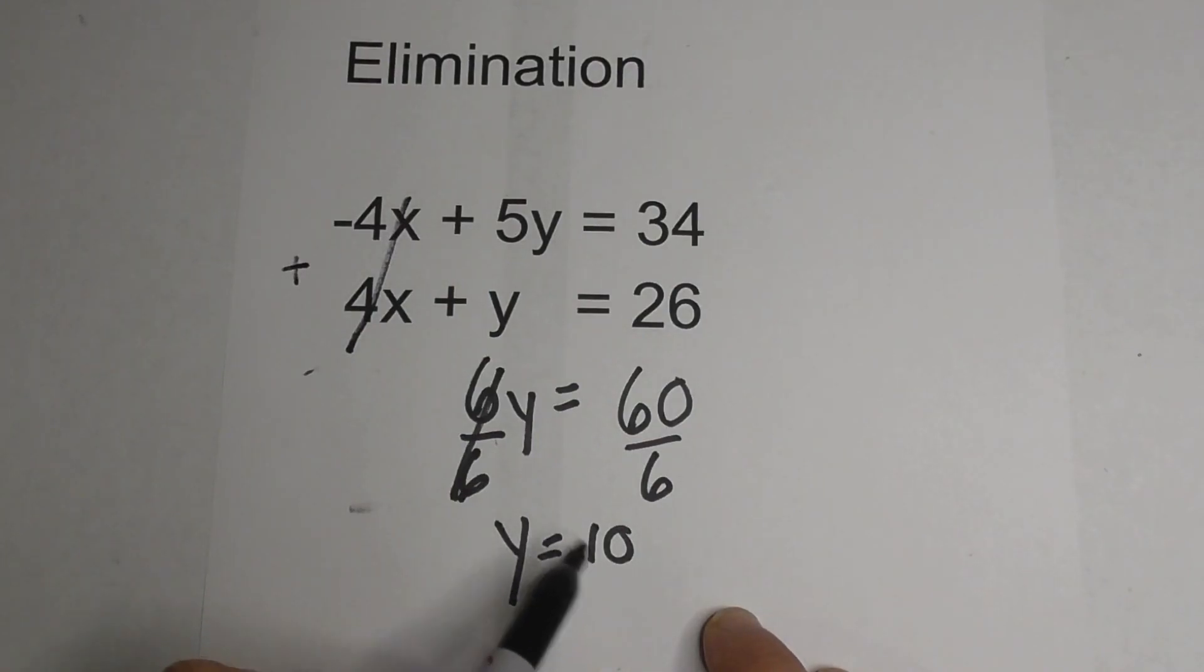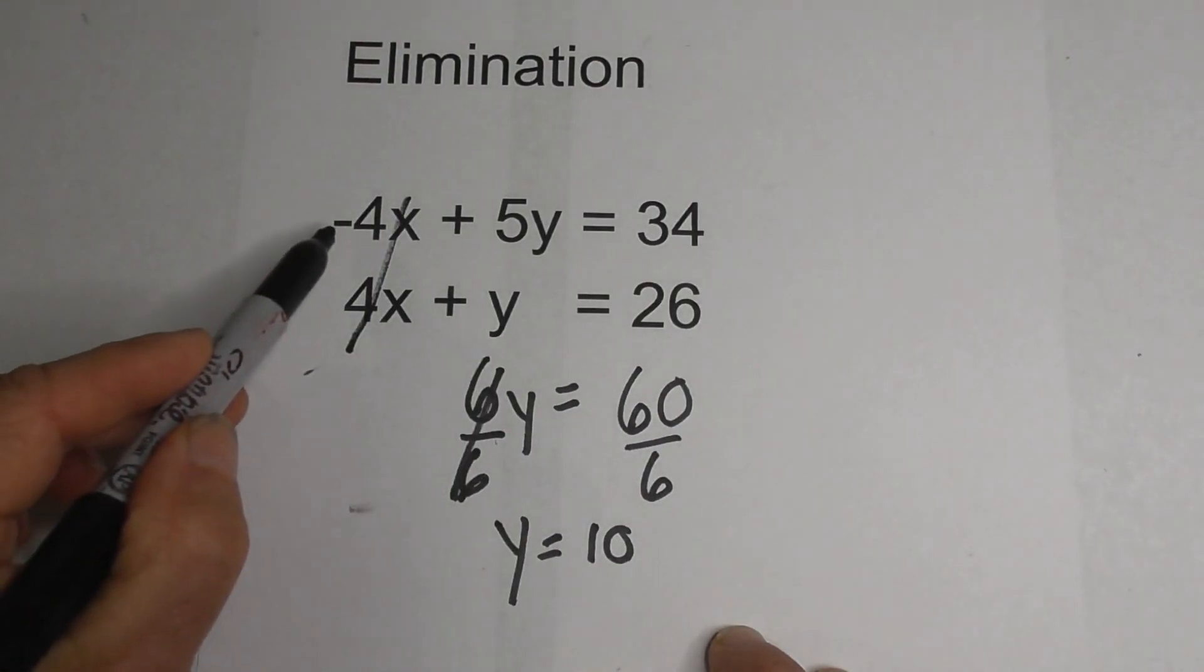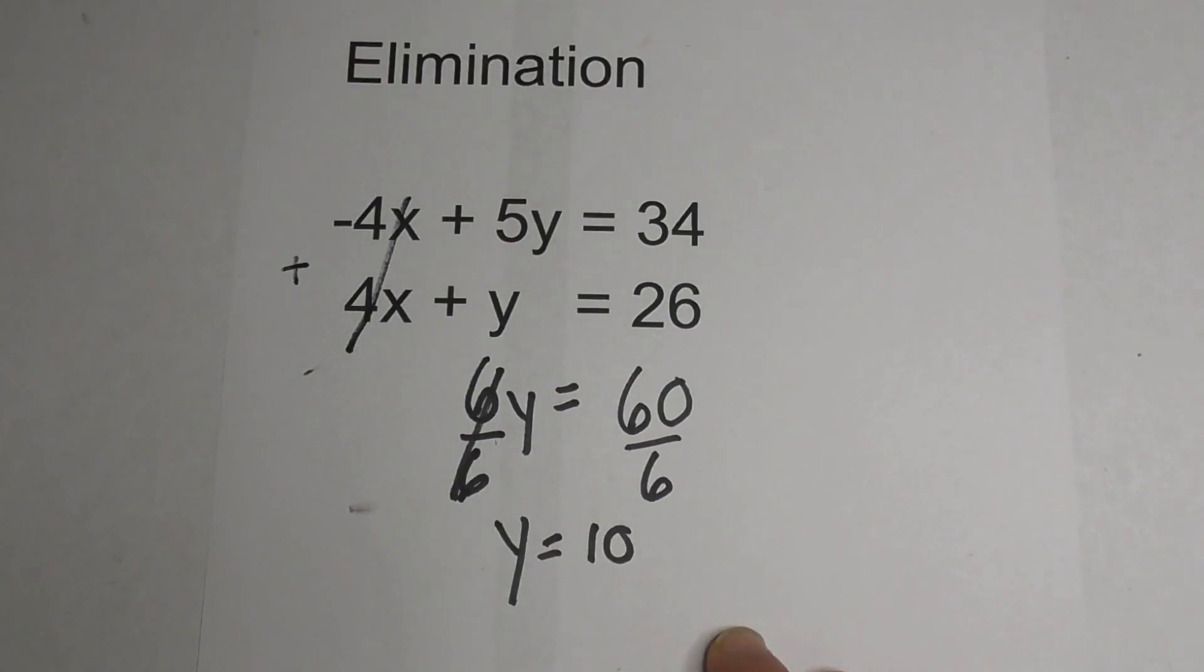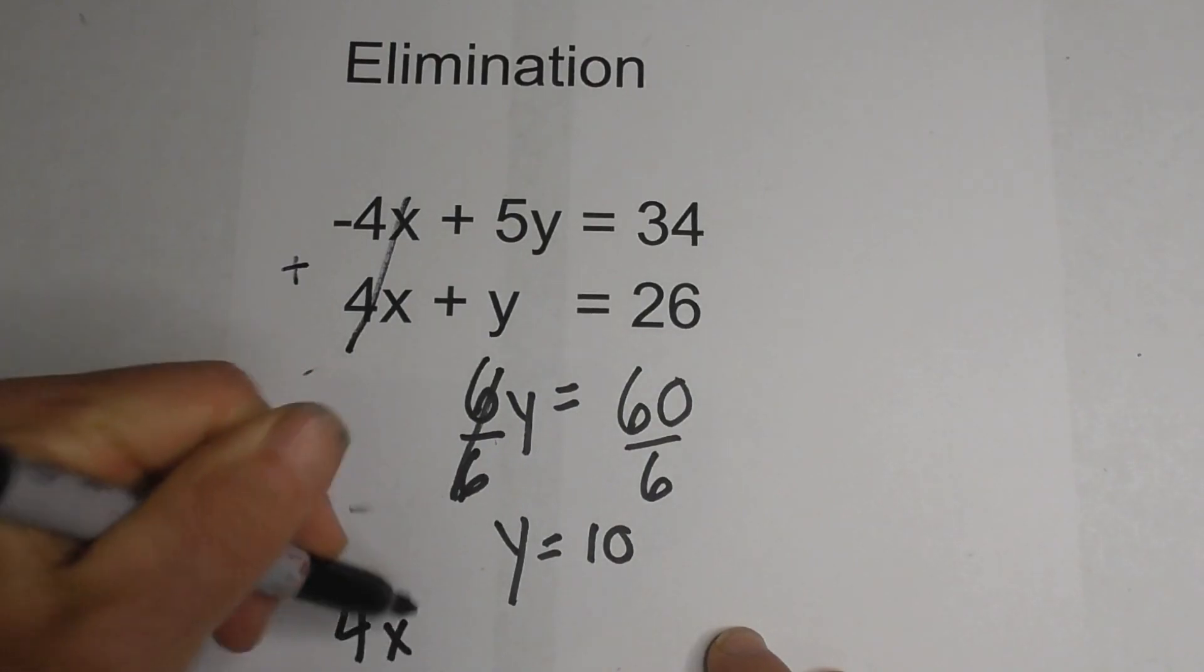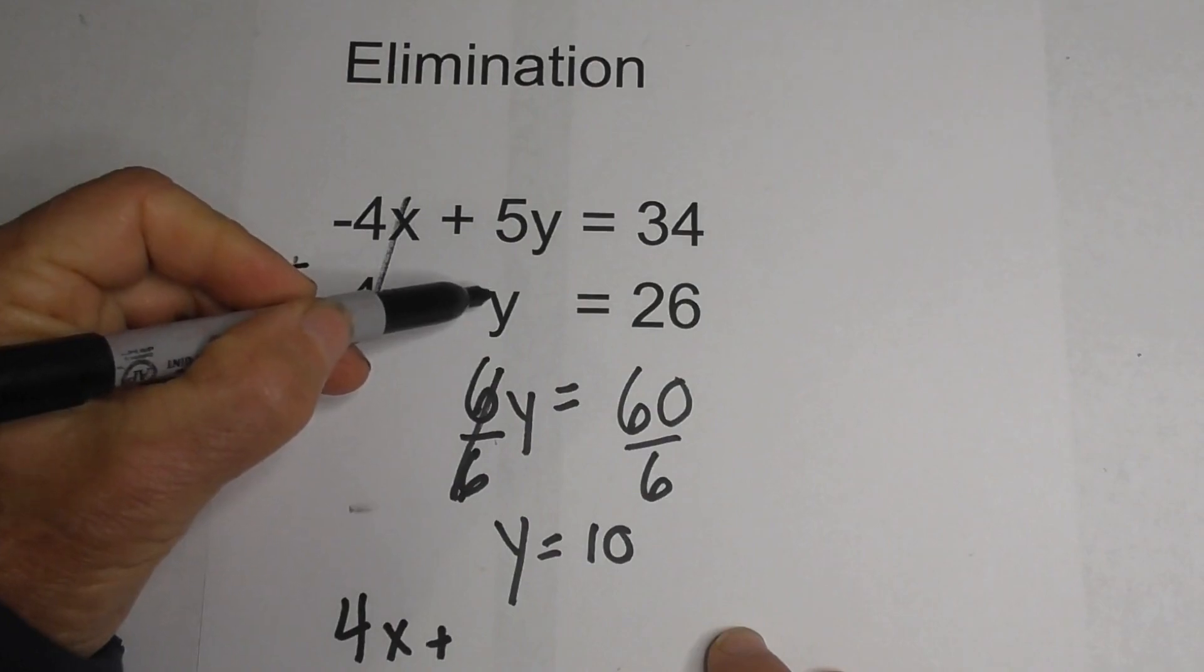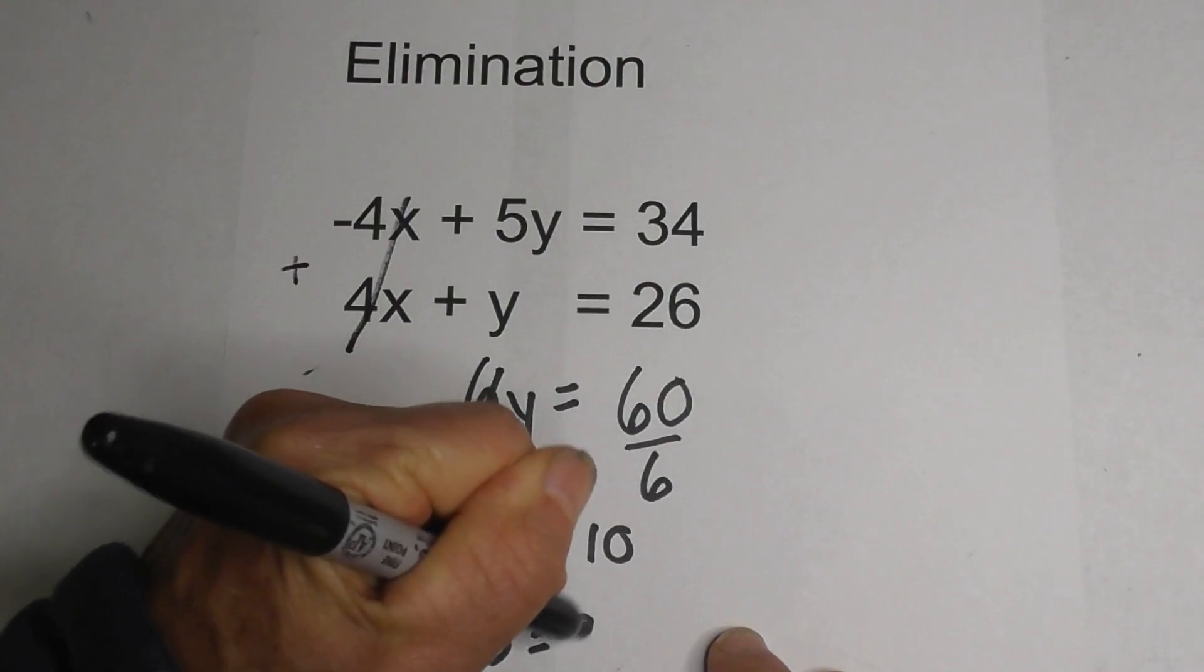So now we have a solution for y. But we need one for x now. And we can plug it into either one of these equations. I'm going to choose 4x plus y because I don't want to work with the negative number. So now I'm going to plug this in. So we have 4x plus, for the y now I have a solution, so I'm going to fill in 10 equals 26.